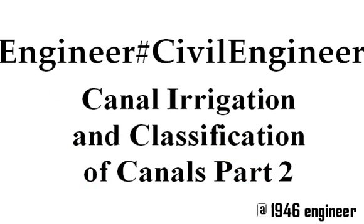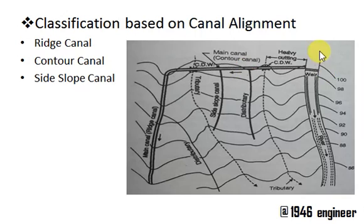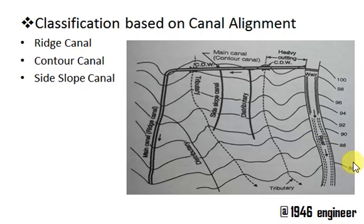I am sorry for that. Based on alignment, canals can be classified into ridge canal, contour canal, and side slope canal. Here we need to know a few terms. This is the natural water course or the natural river, and these are the contour levels of a topography: 86, 88, 90, 92.